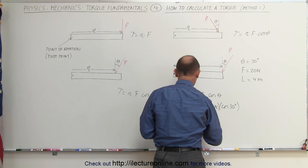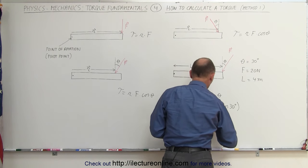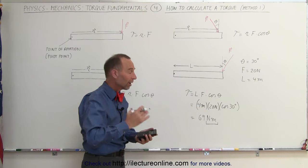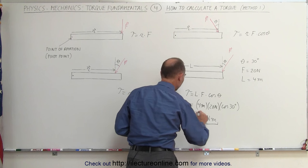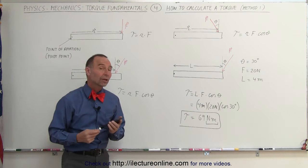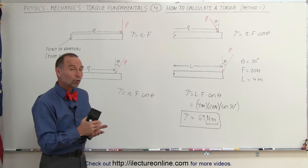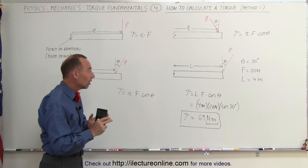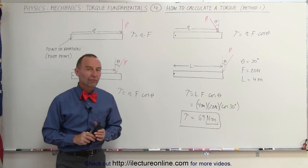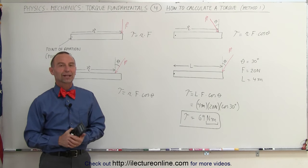So we get 4 times 20 times the cosine of 30, and we get 69.3 — we'll just round it off — equal to 69 newton meters. Notice that the units of torque are newtons times meters, which is force times distance. So the torque is equal to 69 newton meters. That's our first method of how to find the torque. Notice we're only dealing with the magnitudes, not with the actual direction — that will come later.